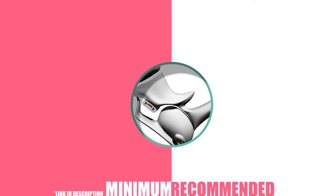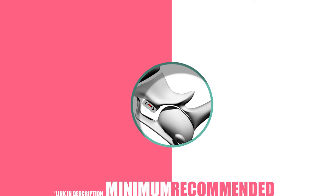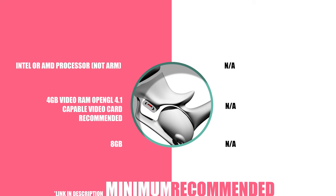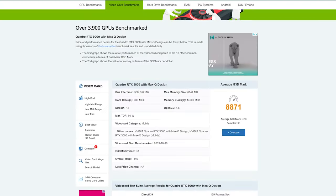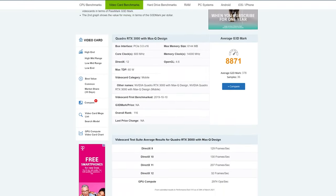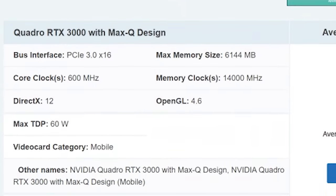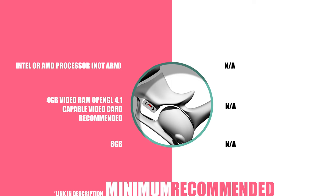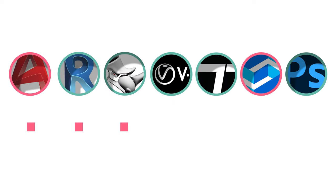Under our 3D modeling category, Rhino doesn't differentiate between minimum or recommended — they just have one set of specs. They recommend 64-bit Windows 10 or 8.1, an Intel or AMD processor (not ARM), 8 GB of RAM, and a video card with 4 GB of RAM and OpenGL 4.1 capabilities. The Passmark software website lets you know what your graphics card is capable of — mine supports 4.6, so we can definitely run Rhino.